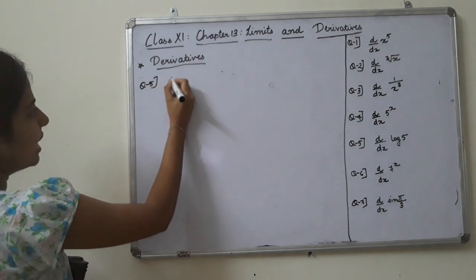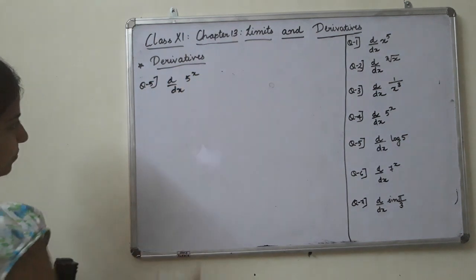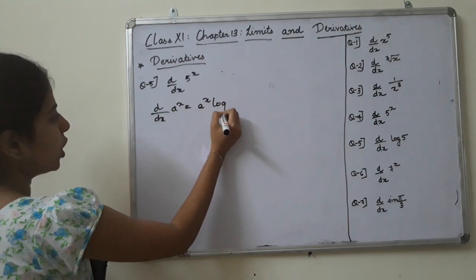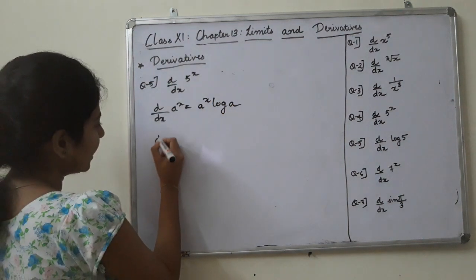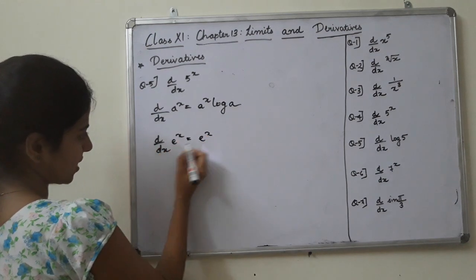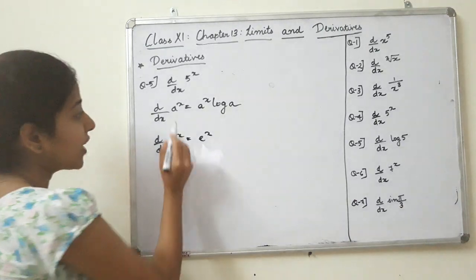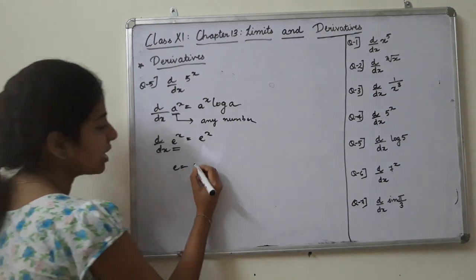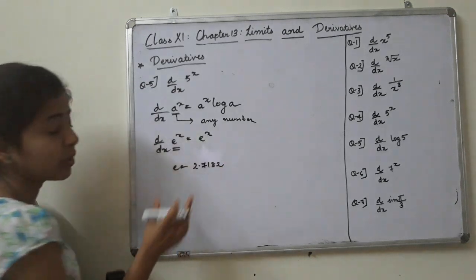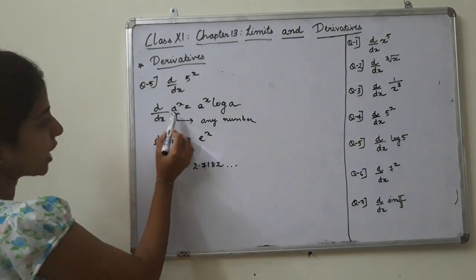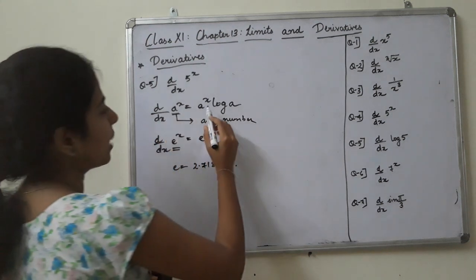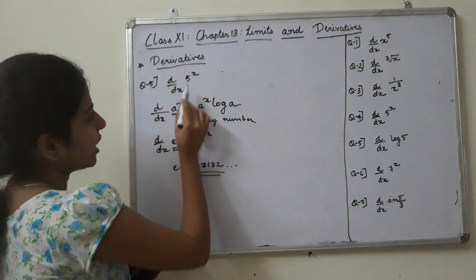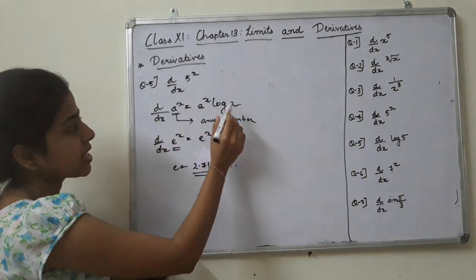Question 5: d by dx of 5 raised to x. Using the formula d by dx of a raised to x equals a raised to x times log a, the answer is 5 raised to x times log of 5.